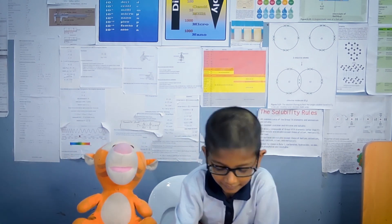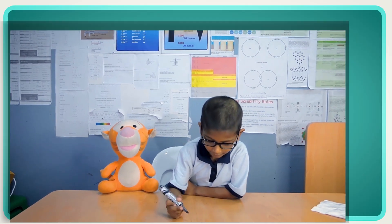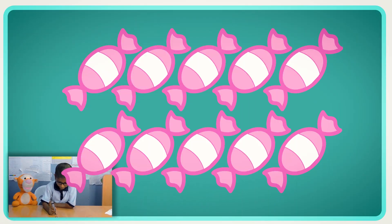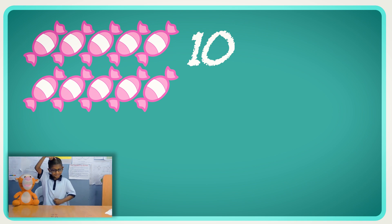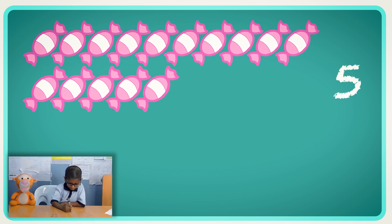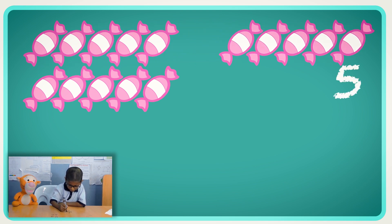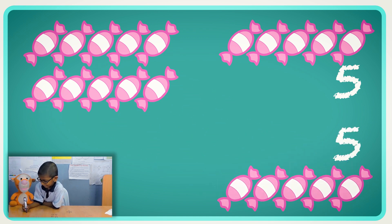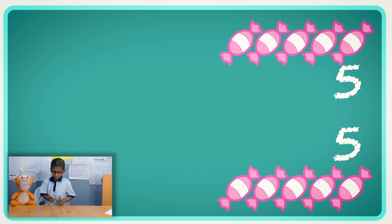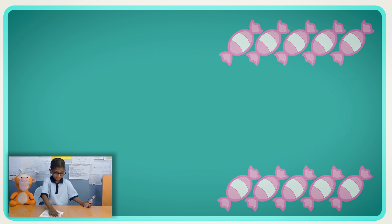So what is division used for? Let's say we had ten sweets. Ten sweets. And we wanted to divide it between the two of us. So I will get five sweets and you get five sweets, and they are all equal. Oh, okay. So that's what you're trying to do.